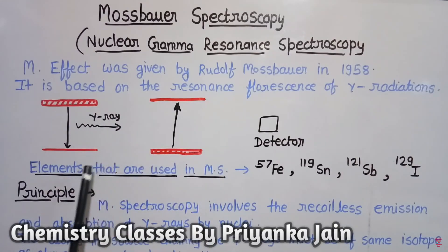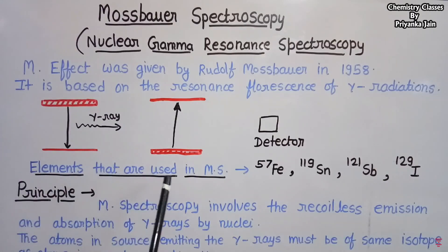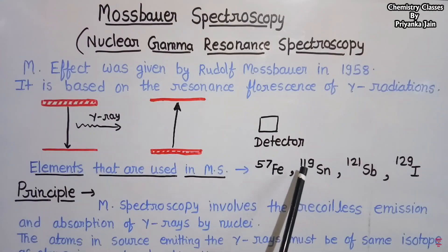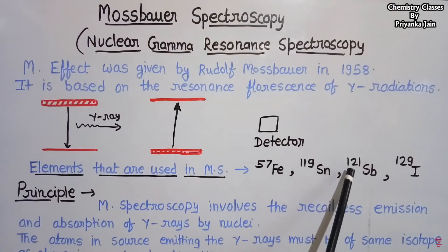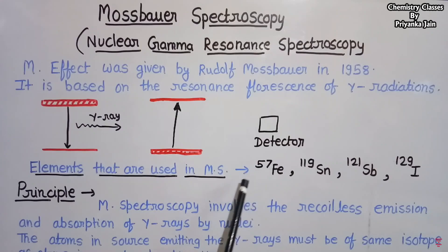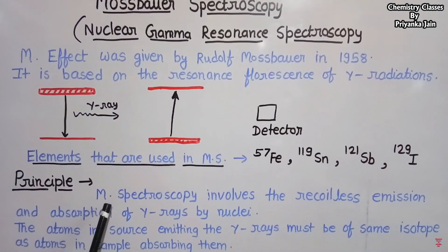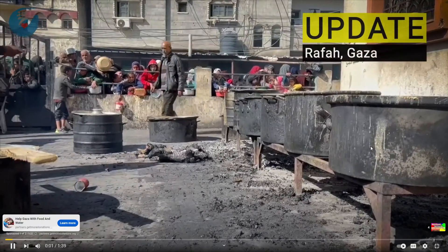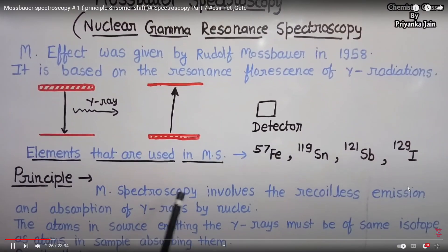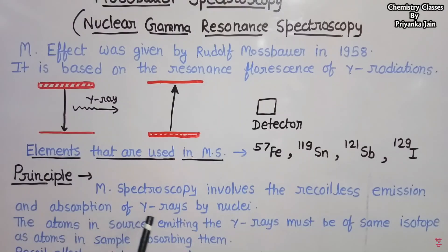Only certain elements are frequently used in Mössbauer spectroscopy; among them, iron is most commonly used. The principle of Mössbauer spectroscopy involves recoil-less emission and absorption of gamma rays by nuclei. The atoms in the source emitting the gamma rays must be of the same isotope as the atoms in the sample absorbing them. For example, to analyze an iron sample, the source must also contain iron.